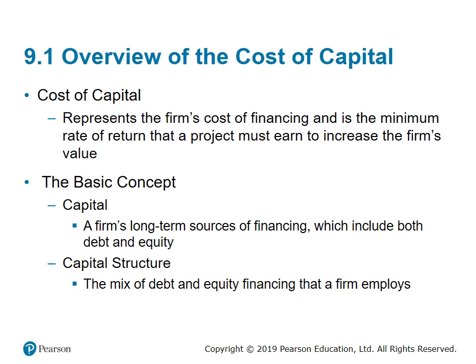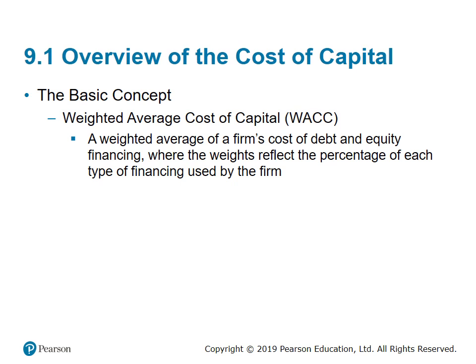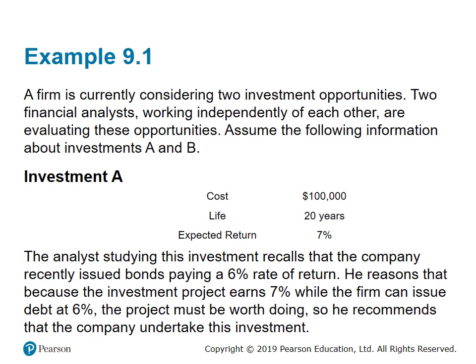Cost of capital represents the firm's cost of financing and the minimum rate of return that a project must earn to increase the firm's value. Capital is the firm's long-term sources of financing, which include both debt and equity. The capital structure is a mix of debt and equity financing that a firm employs. The main basic concept in this chapter is the Weighted Average Cost of Capital, abbreviated as WACC — the weighted average of the firm's cost of debt and equity, where the weights reflect the percentage of each type of financing used.